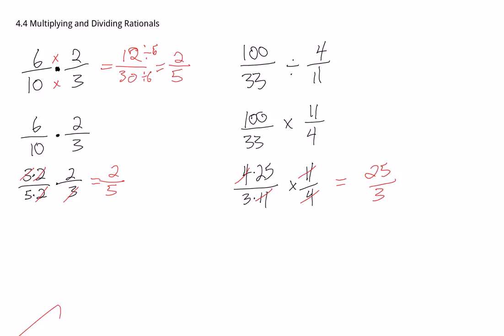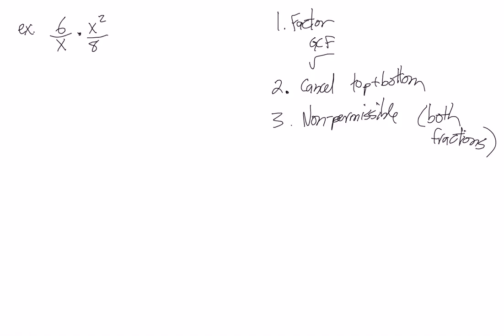Now let's continue this idea with rational expressions. When we're dealing with rational expressions, the same sort of rules apply. The first step in any case is to factor as much as possible — either by taking out a greatest common factor or by doing square root factoring. The second step is to cancel anything on the top and bottom across any of the fractions; it doesn't matter which fraction it's in as long as there's one on top and one on bottom. And then the last step is to state non-permissibles, and you've got to make sure you do that for both fractions.